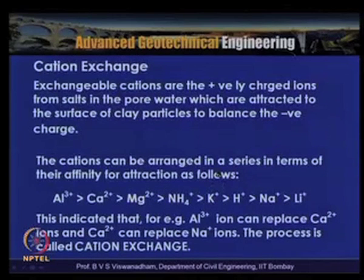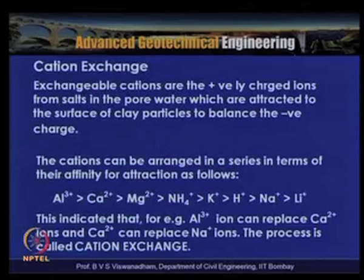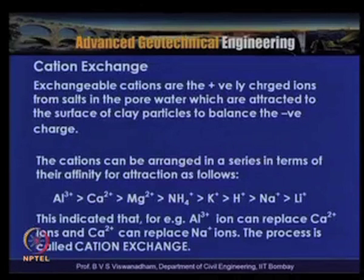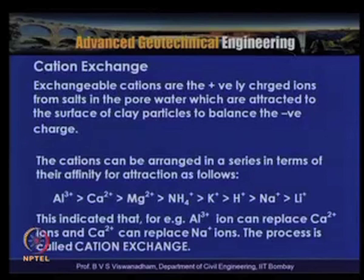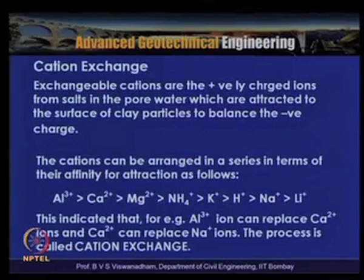The exchangeable cations — positively charged ions from salts in the pore water attracted to the clay surface to balance the negative charge — can be arranged in order of affinity for attraction: Al³⁺ > Ca²⁺ and Mg²⁺ > NH₄⁺ > K⁺ > H⁺ > Na⁺ > Li⁺. This means Al³⁺ can replace Ca²⁺, and Ca²⁺ can replace Na⁺; this process is called cation exchange.